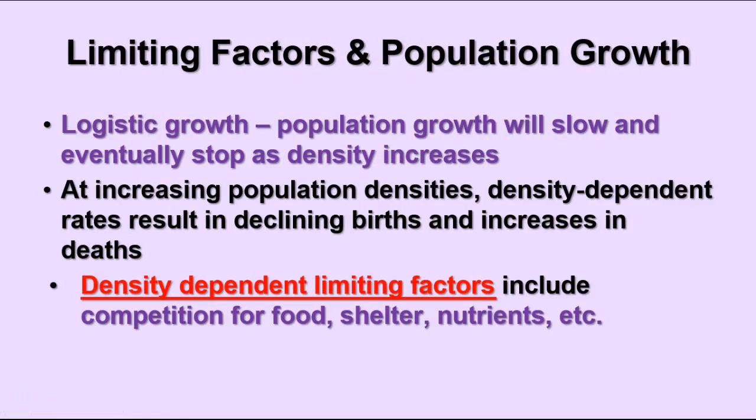Logistic growth will eventually slow down the population, and we look at limiting factors in a couple of ways. One kind is a density-dependent limiting factor — things that depend on the density of the population in an area. These result in declining birth rates and increasing death rates to the point where those rates more or less equal each other out. This could be competition for food, shelter, nutrients, space, or water — all things that are limited based on population density in that area.